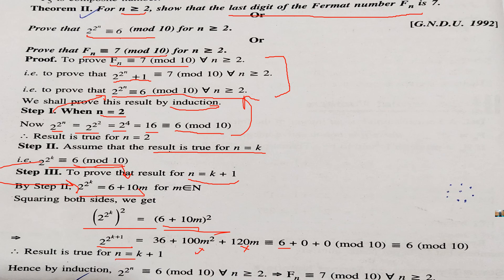In this way, we have result proved for n is equal to k plus 1. Then we can say that 2 raised to power 2 raised to power n is congruent to 6 mod 10 or fn is congruent to 7 mod 10. So, in this theorem, we have learnt how to prove a Fermat number's last digit is 7 when n is greater than 2.